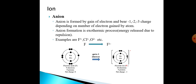Anion formation is an exothermic process, contrary to cation formation which is endothermic. Why is anion formation exothermic? During electron addition, the already present electrons repel the incoming electron, and due to this repulsion energy is released, making the process exothermic. Examples include fluorine and chlorine — when we add an electron to a fluorine atom, it carries a minus one charge.